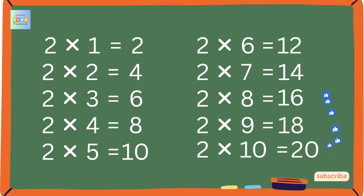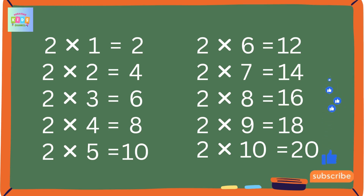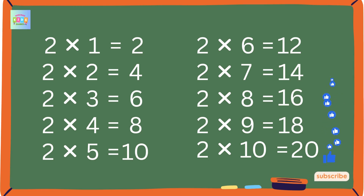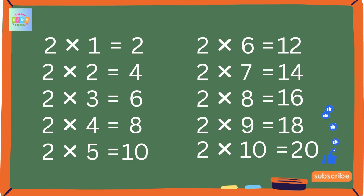2 1s are 2, 2 2s are 4, 2 3s are 6, 2 4s are 8, 2 5s are 10, 2 6s are 12, 2 7s are 14, 2 8s are 16, 2 9s are 18, 2 10s are 20.